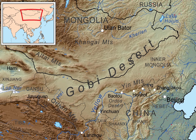The fauna consists of little but antelope, wolf, fox, hare, hedgehog, marten, numerous lizards and a few birds, e.g. the sandgrouse, lark, stonechat, sparrow, crane, Henderson's ground jay, horned lark, and crested lark.